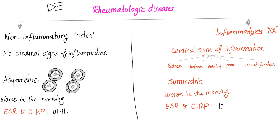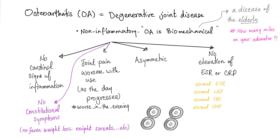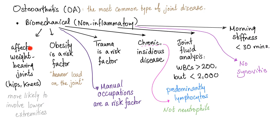Rheumatological diseases are divided into non-inflammatory, such as osteoarthritis, and inflammatory, such as rheumatoid arthritis. In osteoarthritis, we have no cardinal signs of inflammation. It's asymmetrical, pain is worse in the evening, and ESR and CRP are normal. Osteoarthritis is non-inflammatory — no constitutional symptoms, pain is worse with use because it's biomechanical, and it affects weight-bearing joints.